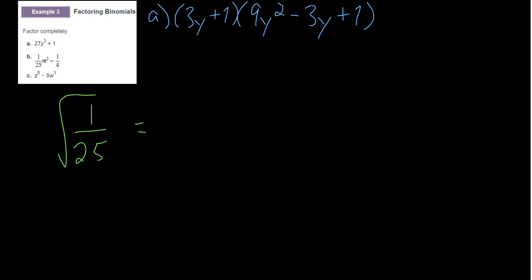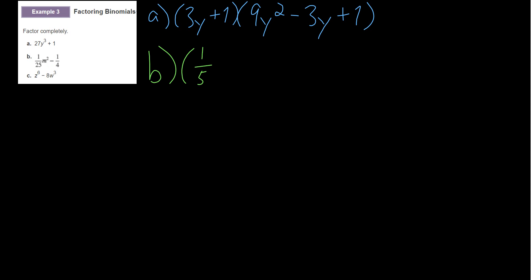They're not perfect cubes — they're perfect squares. And we've learned that we can only do the difference of squares. Luckily we have a difference there, so we can indeed factor this. It becomes (a plus b)(a minus b). The a value would be (1/5)m — the square root — and it's going to be plus the square root of 1/4, giving (1/5)m plus 1/2, times (1/5)m minus 1/2. And that is the difference of squares for B.